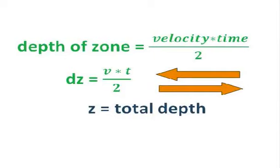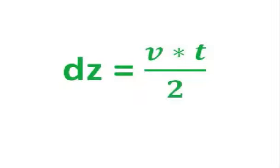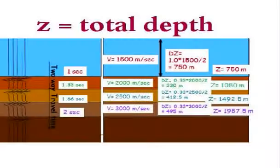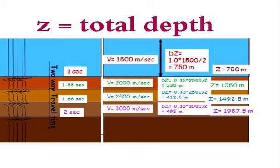Using V for velocity, DZ for depth of the zone, and Z for the total depth, we can solve the following equation. Depth equals velocity times time divided by 2. V equals 1,500 meters per second. DZ equals 1.0 seconds times 1,500 divided by 2 equals 750 meters.